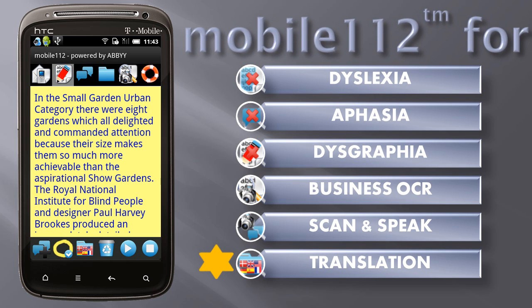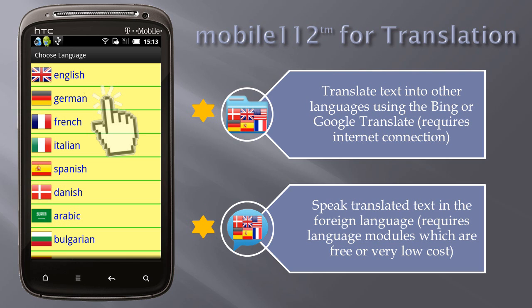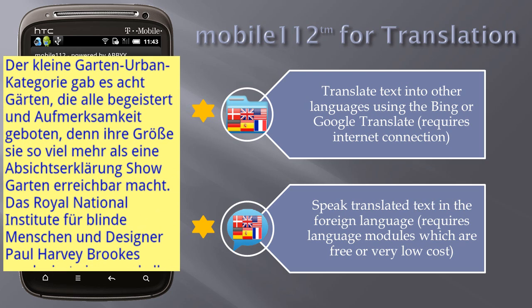Mobile 112 translation. Translate text into other languages using Bing or Google Translate — requires an internet connection. Speak translated text in the foreign language, which requires language modules available at very low cost. Tap the Translate button, choose your preferred language, and the text is translated. If that language module is present, it will be spoken in that language.